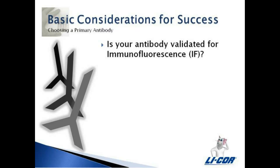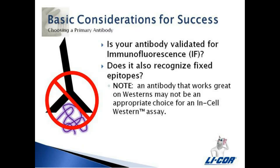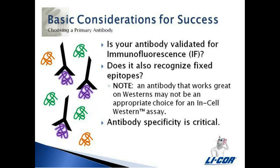When choosing your reagents for your experiment, it is important to select a primary antibody that is rated by the manufacturer as validated for immunofluorescence. The antibody you choose must also be able to recognize fixed epitopes. Note that an antibody that works great on westerns may not be the appropriate choice for an in-cell western. Antigens in ICWs have been fixed and will form cross-links that look different than the same denatured antigen in a western. Choosing an antibody that recognizes your antigen of interest is important because in ICWs there is no way to determine the molecular weight of the detected antigens. Verifying the specificity of your chosen antibody is critical to success.